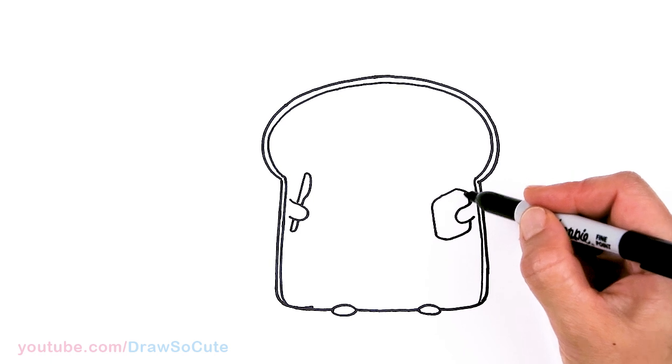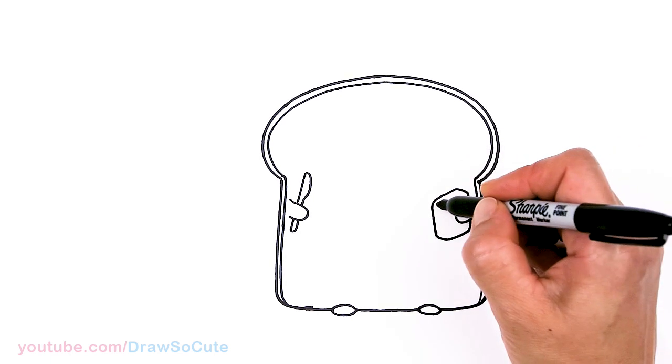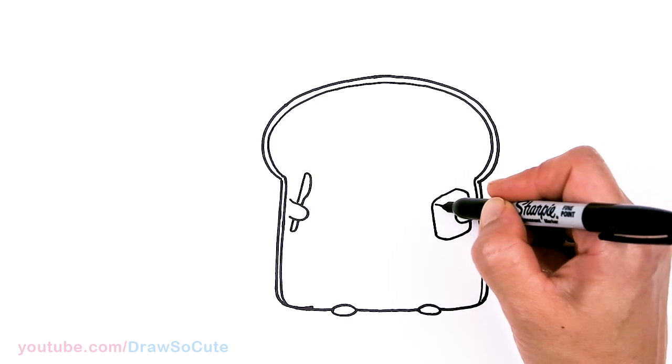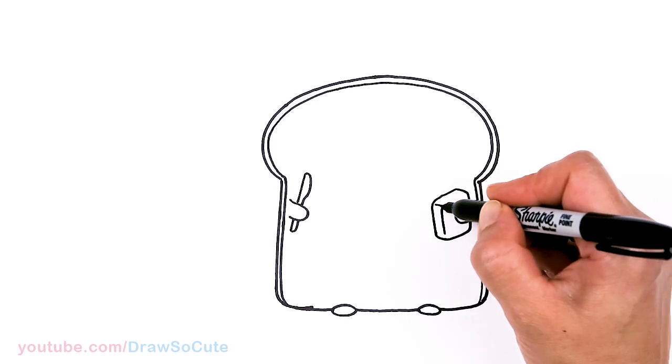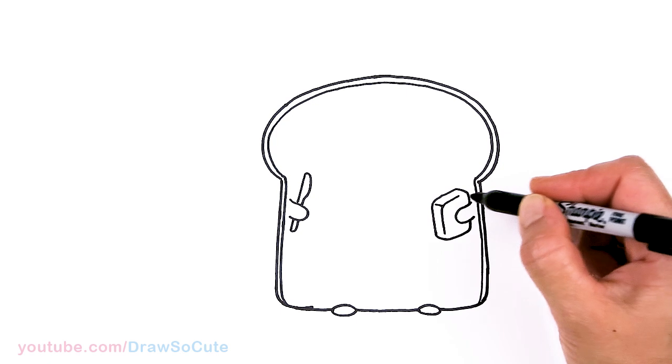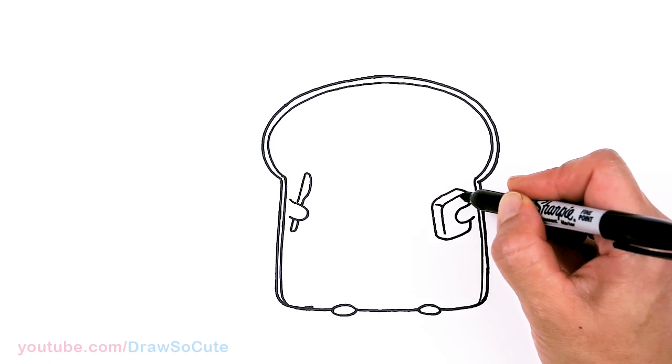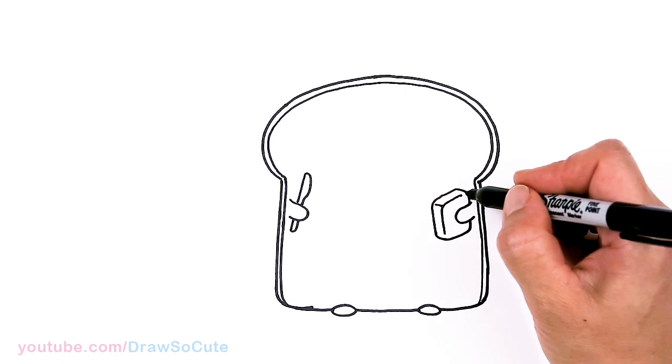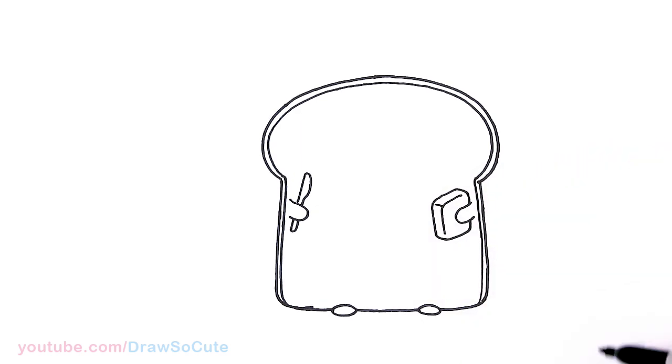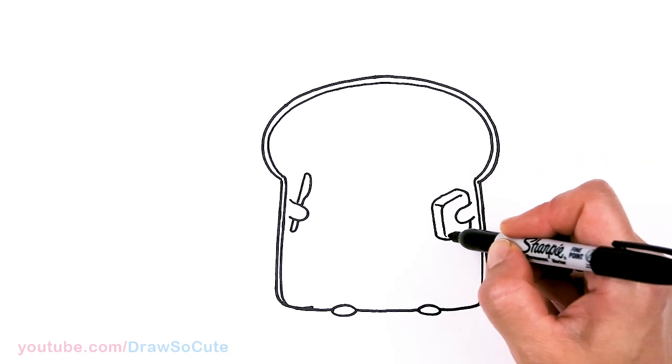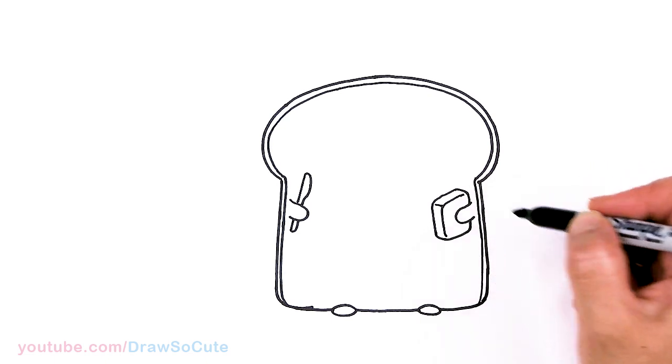So you just want to try create these two edges so that we can come back in here. Give it a little line. And create this curve just to give our slice of butter here some volume. So that's the goal. Bring this curve in a little bit more.